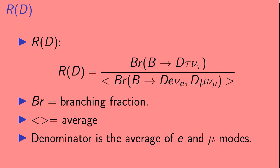Now we're ready to talk about the definition of R(D). R(D) is the ratio of the branching fraction of a B meson to a D meson and a tau lepton and a neutrino, to the branching fraction of a B meson to a D meson and either an electron and a neutrino or a muon and a neutrino. The branching fraction is just the fraction of the time that a B meson decays in that particular way. The denominator is the average of the electron and muon branching fractions.